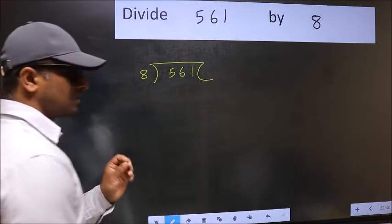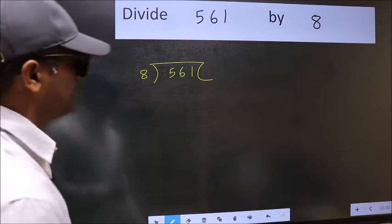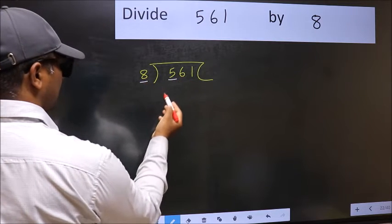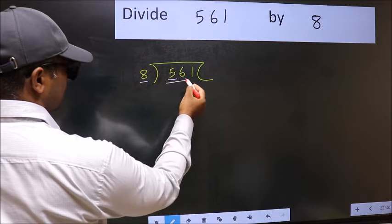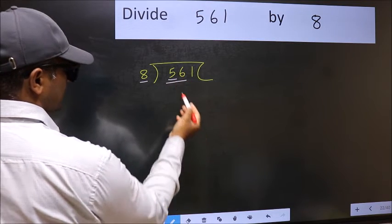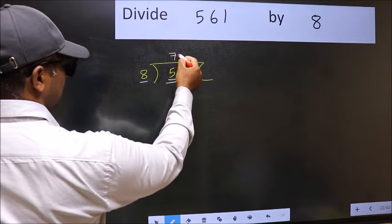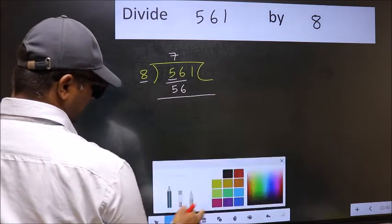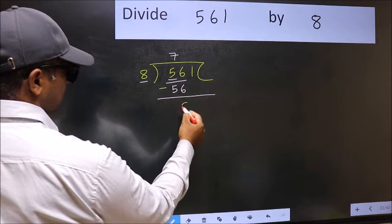561 and 8 here. This is your step 1. Next, here we have 5 and here 8. 5 is smaller than 8. So we should take two numbers, 56. When do we get 56 in 8 table? 8 times 7 is 56. Now we should subtract. 56 minus 56 is 0.